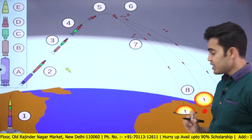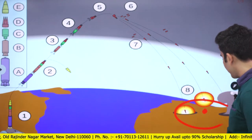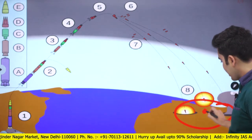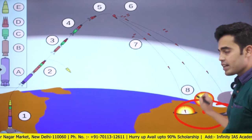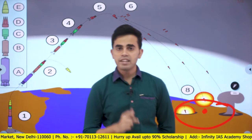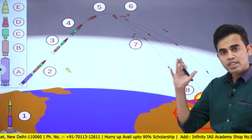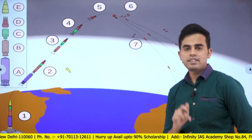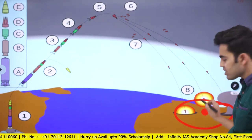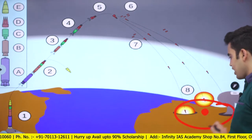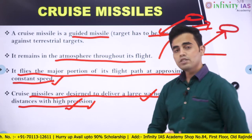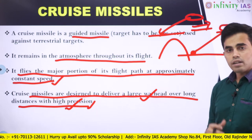If we use a ballistic missile, it will have a larger area of impact because the precision is low. A cruise missile can hit only a specific spot. For example, if we want to tactically strike a military facility in enemy territory without disturbing the civilian territory outside, we can use a cruise missile to hit only the small military facility without damaging any civilian territory. This is one advantage of cruise missiles over ballistic missiles.